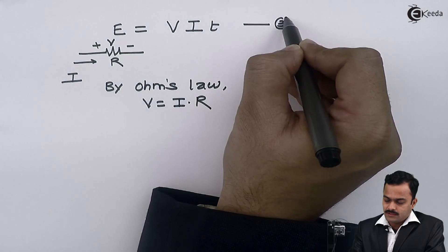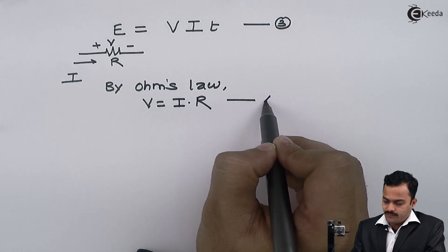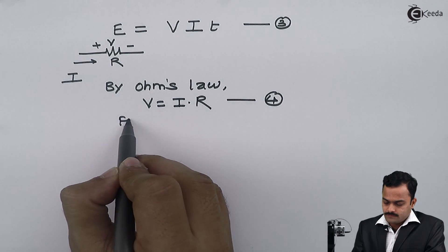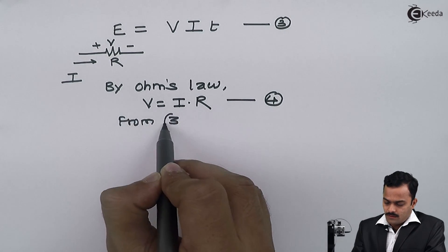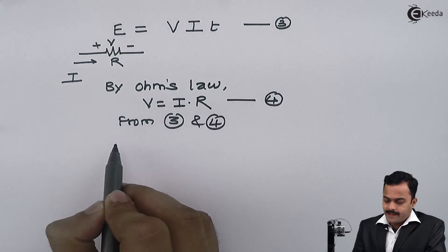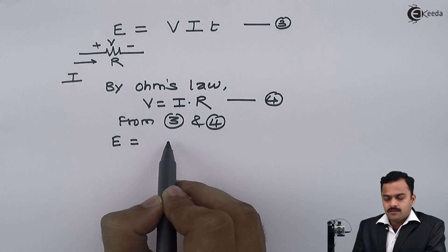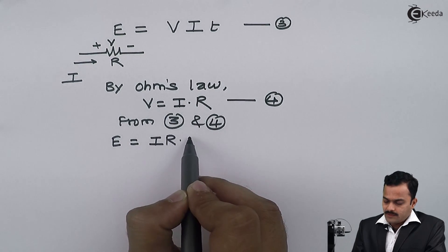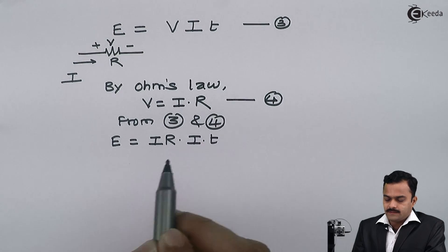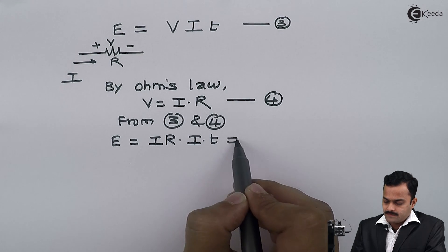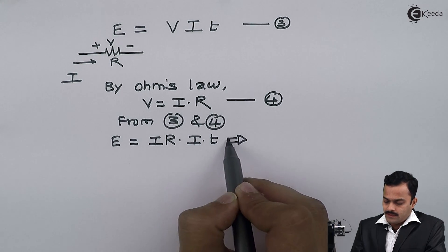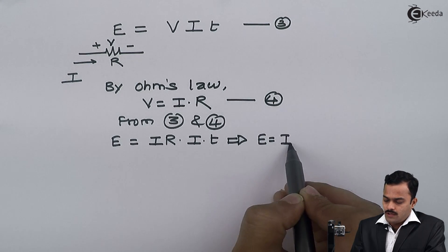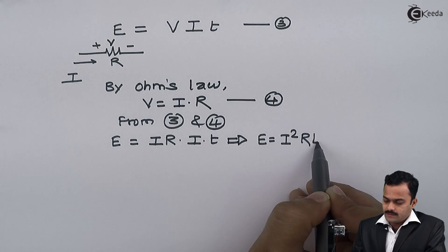By Ohm's Law I can say V equals I into R. Let me call this equation number three, and E equals VIT is equation number four. From equations three and four I can write E as I·R multiplied by I into T, which gives electric energy equal to I²RT.